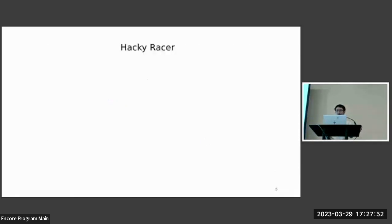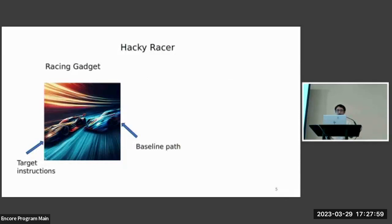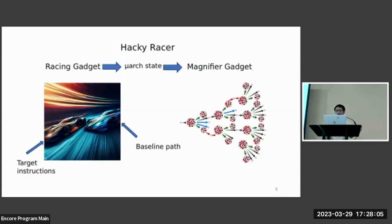The Hack Eraser comprises two types of gadgets: the racing gadget and the magnifier gadget. The racing gadget first leaves a microarchitecture state based on the execution time of the target operation, which is then amplified by the magnifier gadget to an observable extent.